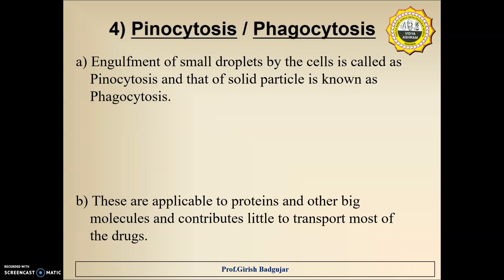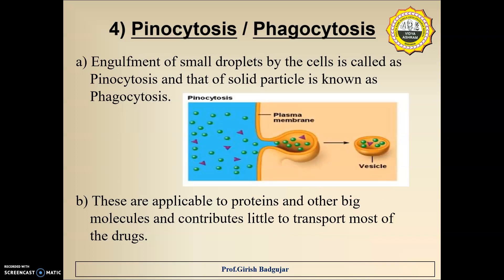The final method is pinocytosis and phagocytosis. Engulfment of small droplets by the cell is called pinocytosis, while that of solid particles is known as phagocytosis. Although these are applicable to proteins and other large molecules, they contribute very little to the transport of most drugs.